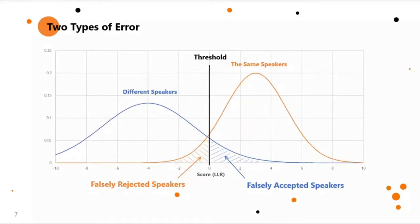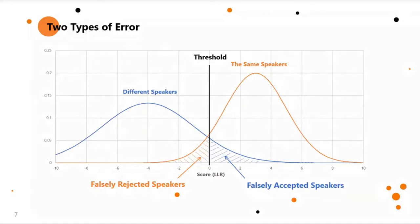When we measure or test such a system, we usually take a database where we always have two recordings and information on whether there is the same speaker in both recordings or two different speakers. We run this database through our system and get a score. Then we compare the score with a threshold — above the threshold, the system says it's the same speaker; below the threshold, it says it's a different speaker. Comparing the result with the true results from our test database, we can see two kinds of errors.